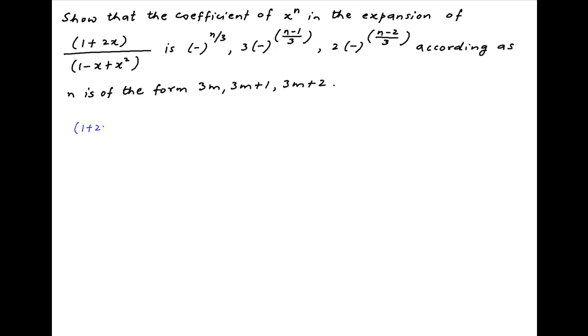The given expression is 1 plus 2x divided by 1 minus x plus x square. Now multiply the numerator and denominator of this expression by 1 plus x.